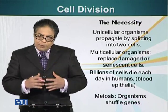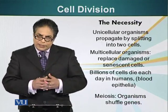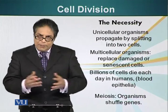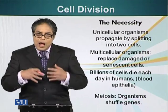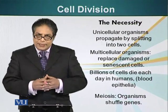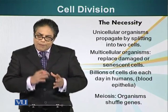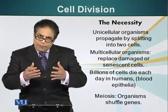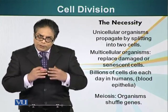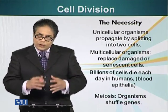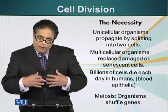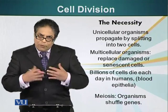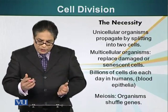In humans, billions of cells die each day. For example, red blood cells and our epithelial cells — these cells have to be replaced. The replacement of the cell has to come from another cell in the process of cell division.